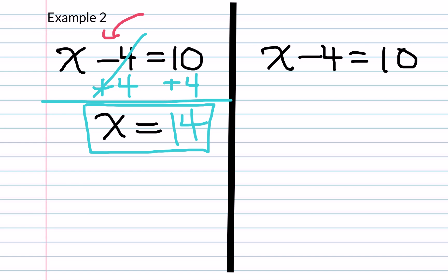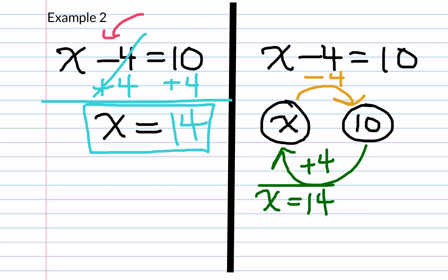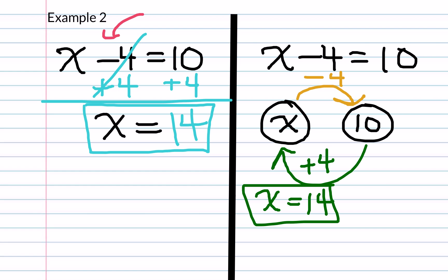For our visual learners, we'll also incorporate the mapping method. We start with our variable, then our solution, which was 10. Our original problem tells us we are subtracting 4 from x to get 10. So when working in reverse, we perform the inverse operation — plus 4 — to see that x equals 14. To check, we substitute 14 in: 14 minus 4 gives us 10, and going in reverse, 10 plus 4 gives us 14, so that works out.